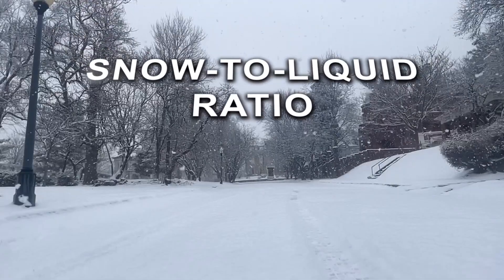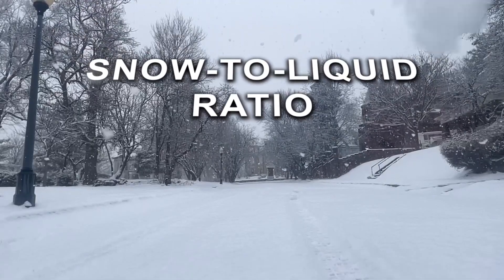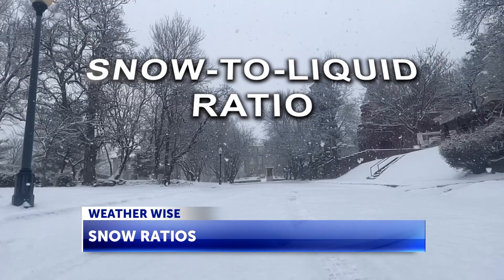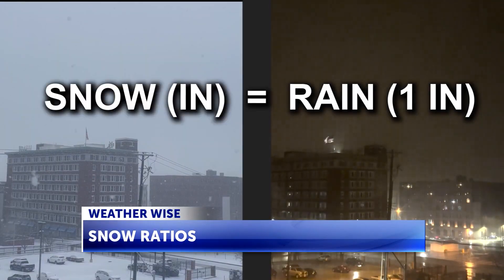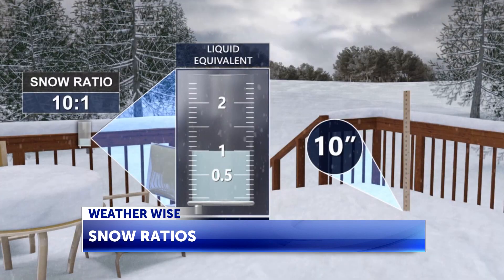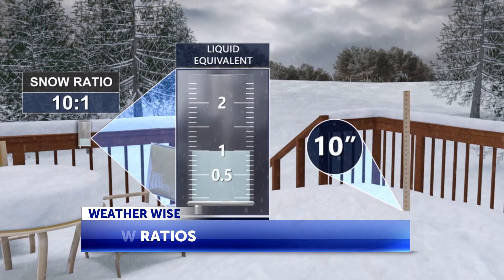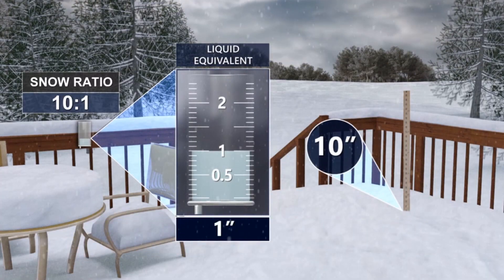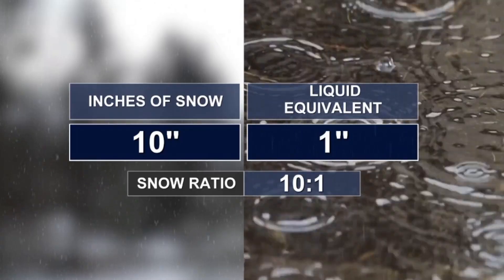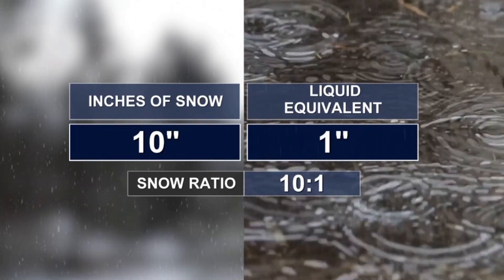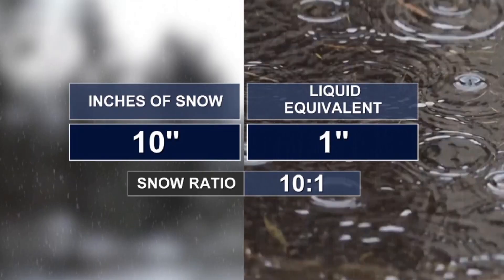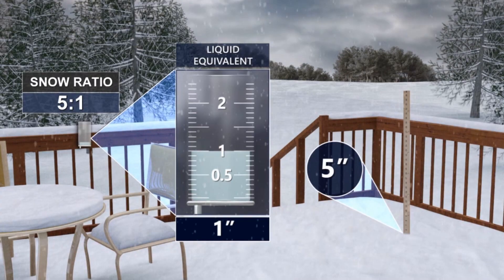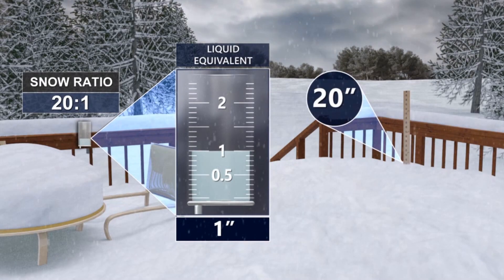Snow-to-liquid ratios provide a measure of snowfall's water content by determining how many inches of snow is equal to one inch of rain. The average or baseline snow ratio is 10 to 1, with 10 inches of snow yielding about one inch of water. This value can vary greatly, ranging between 5 to 1 and 20 to 1.